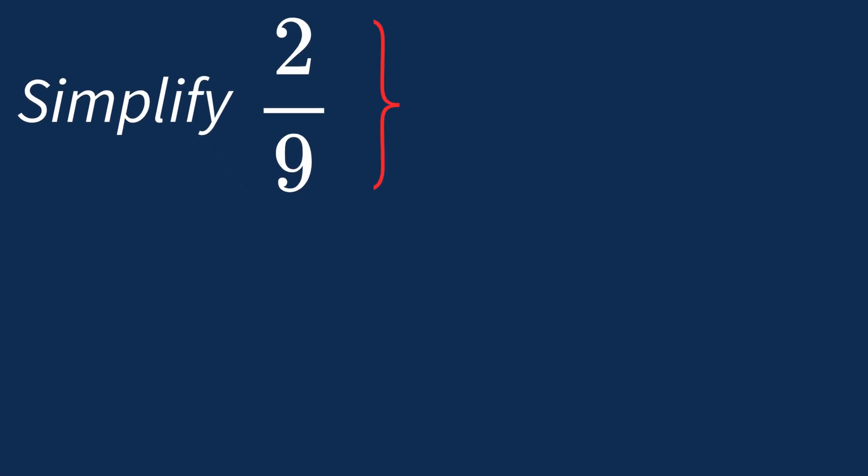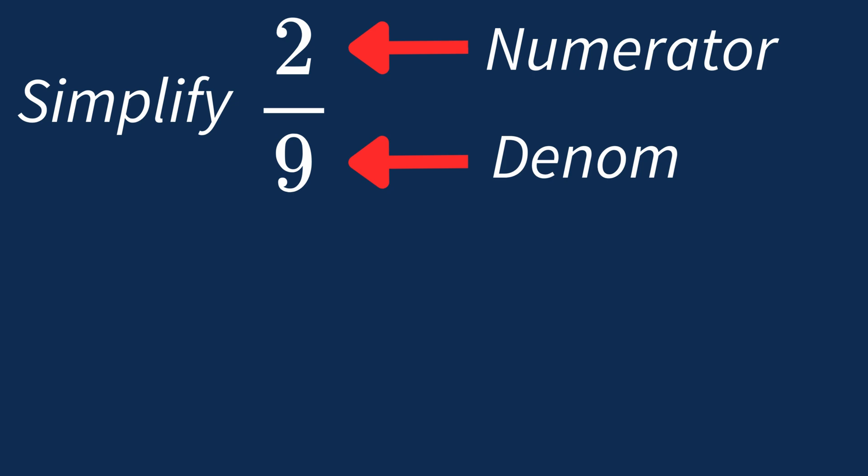When simplifying a fraction like 2 over 9, the first step is to check if there's a common factor between the top number, the numerator, and the bottom number, the denominator.